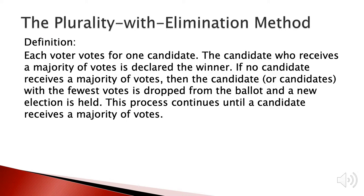The third method is the plurality with elimination method. It is defined as each voter votes for one candidate, and the candidate who receives a majority of votes — meaning more than half of the total number of voters — is declared the winner. If no candidate receives a majority, the candidate or candidates with the fewest votes are dropped from the ballot and a new election is held. This process continues until a candidate receives a majority.